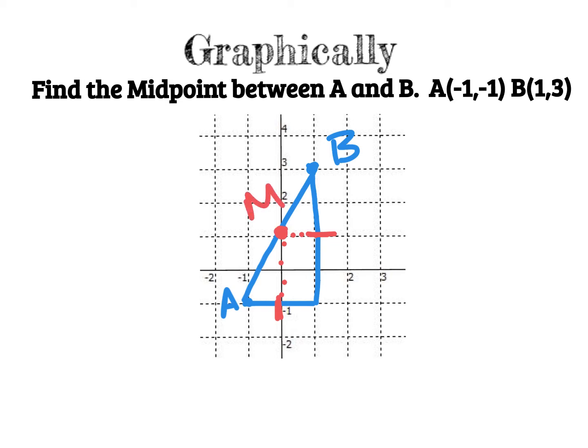So the midpoint here is 0 comma 1, as we did it algebraically. So if you're looking for the middle between two points, you can draw a triangle. Count the horizontal distance as if it were a number line. Count the vertical distance as if it were a number line, right? Find the between point, the halfway between points, and see where they meet. And that's going to give you the halfway diagonal distance, the halfway diagonal location.